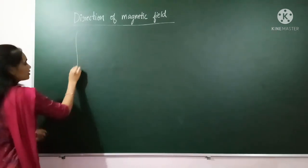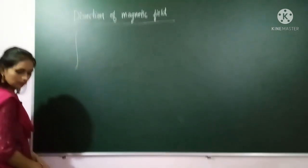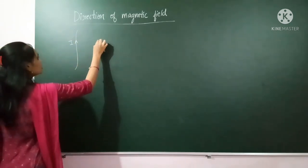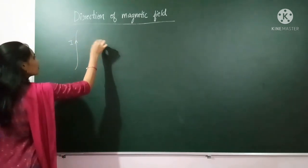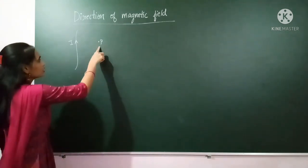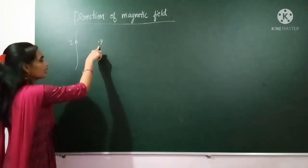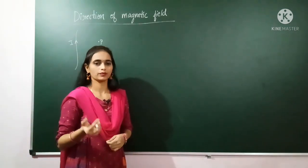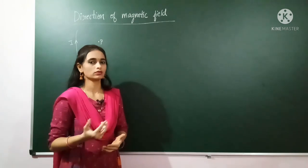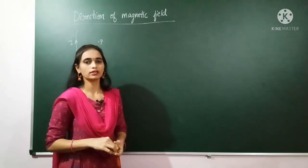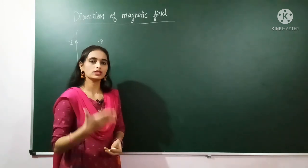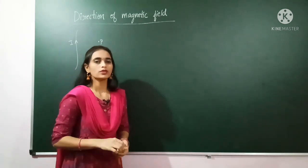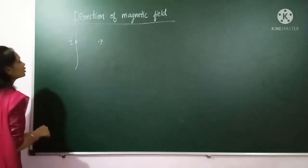For example, if this is a wire with current I flowing through it and P is a point near it, we know how much magnetic field is present at point P, but we don't know its direction. For that, we have two laws we can use: the screw rule, or the right-hand palm rule. Using the right-hand palm rule, we can easily determine the direction of the magnetic field.